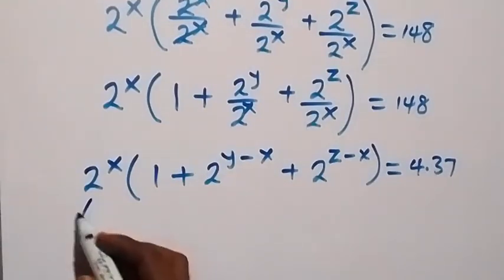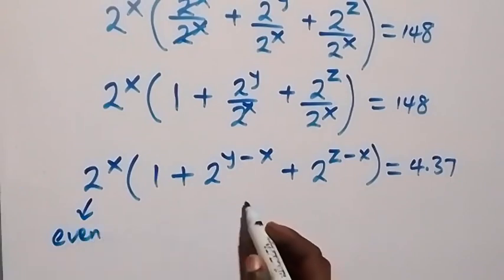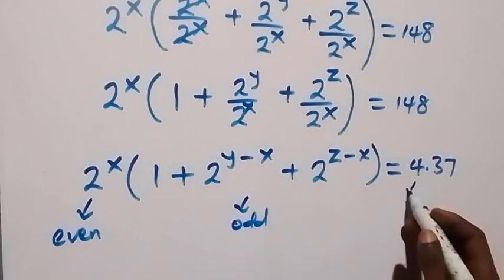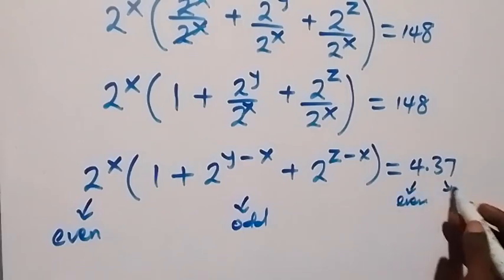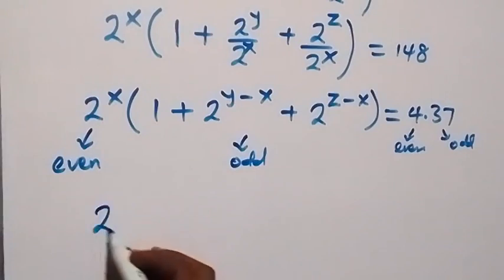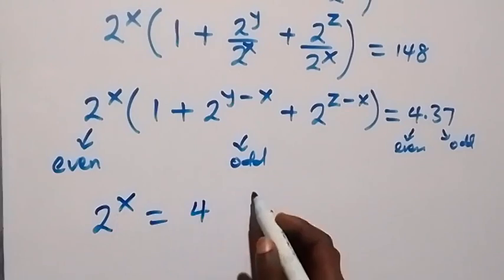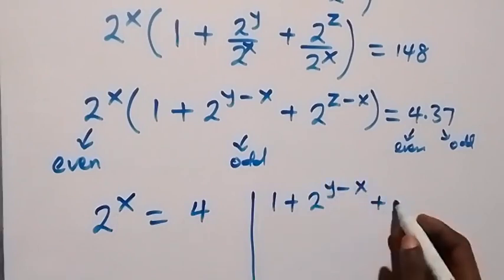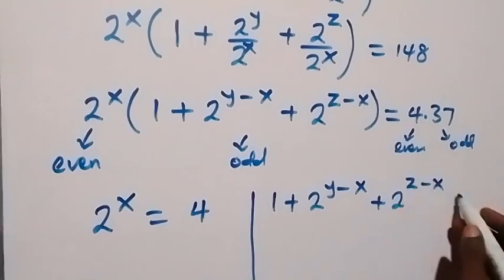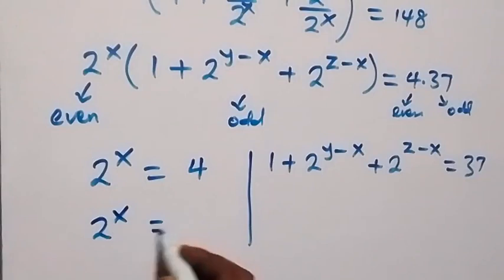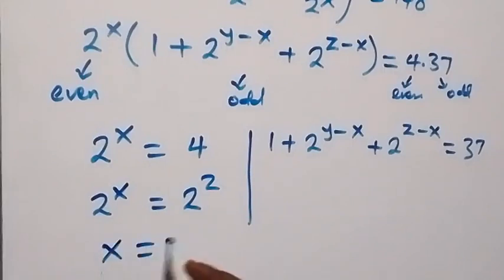When we look at this, 2 to the power x will give us an even number, and everything inside the bracket will be an odd number. So 4 here is also even and 37 here is also an odd number. That means we have 2 cases: we can take 2 to the power x equal to 4, and on this side we have 1 plus 2 to the power y minus x plus 2 to the power z minus x, which equals to 37. Since 4 is also 2 to the power 2, we have same base, that means x equals to 2.